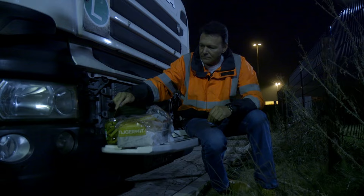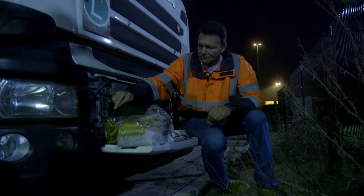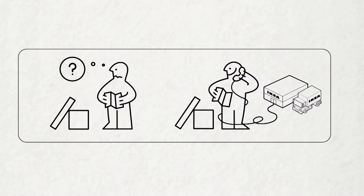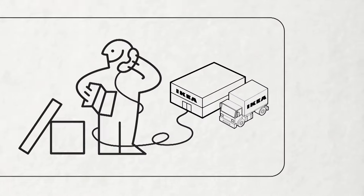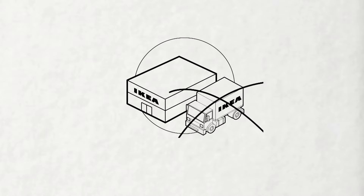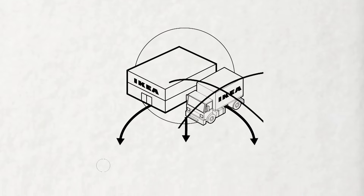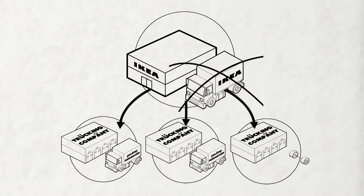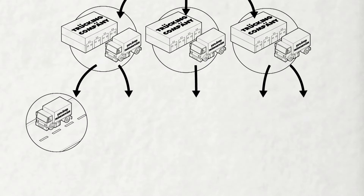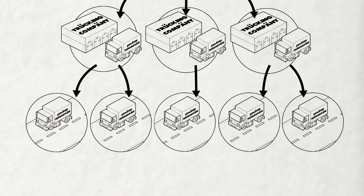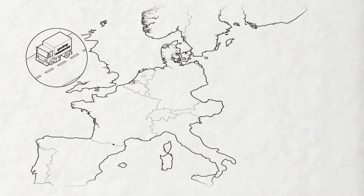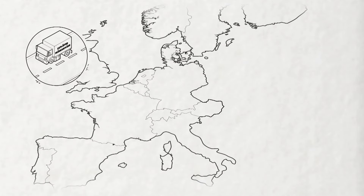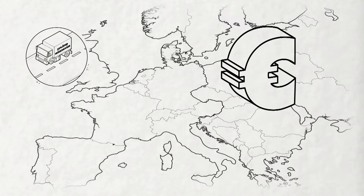How can IKEA allow this to happen? IKEA doesn't have its own trucking operation. It subcontracts the transport of its goods to various trucking companies, and these companies often subcontract the work again. The companies bring Eastern European drivers like Lucian to work in Western Europe, but pay them an Eastern European wage.